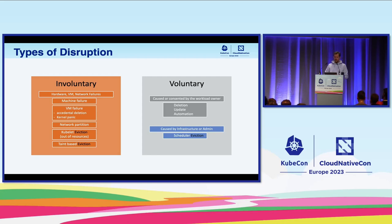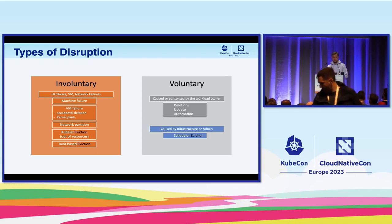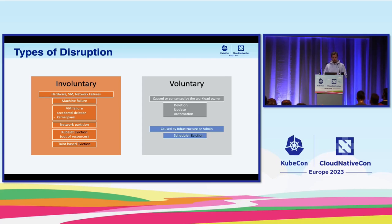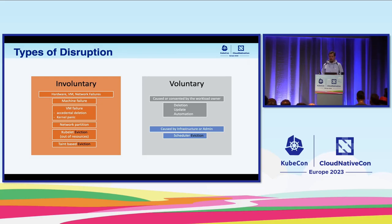Kubernetes classifies disruption in two broad categories. Involuntary — unavoidable cases where a pod can disappear due to various reasons: hardware failures, backing up the node, VM failures or VM disappearances. A cluster administrator can delete VMs, or VMs could disappear due to cloud provider or hypervisor failures, kernel panic, or network partition — all of this could lead to workload disruption.